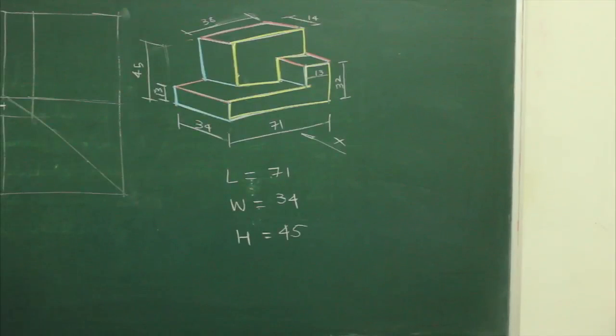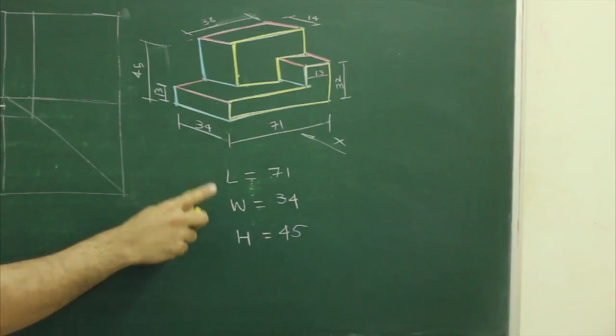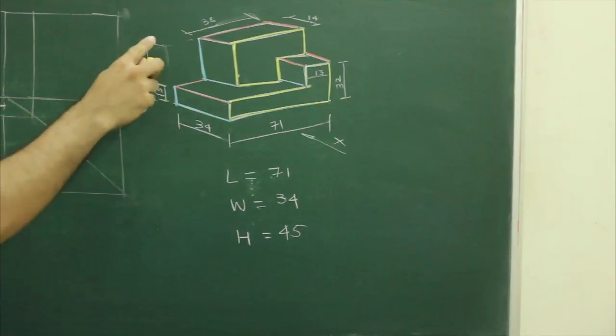First we will find out the length, width and height. Length of this object is 71, width is 34 and height is 45.